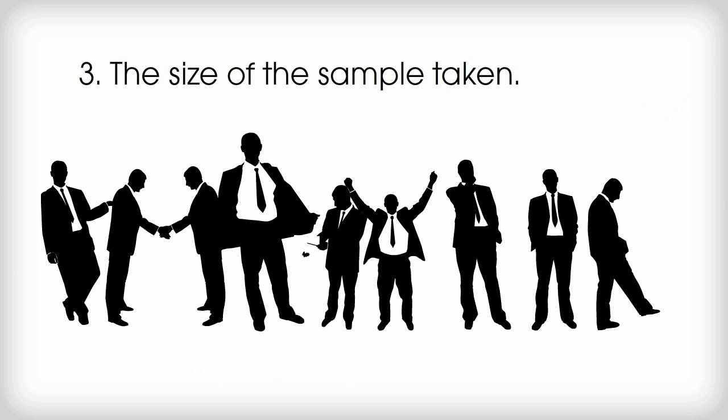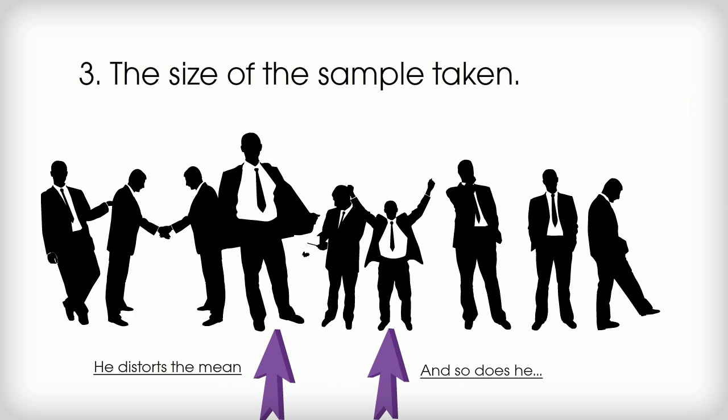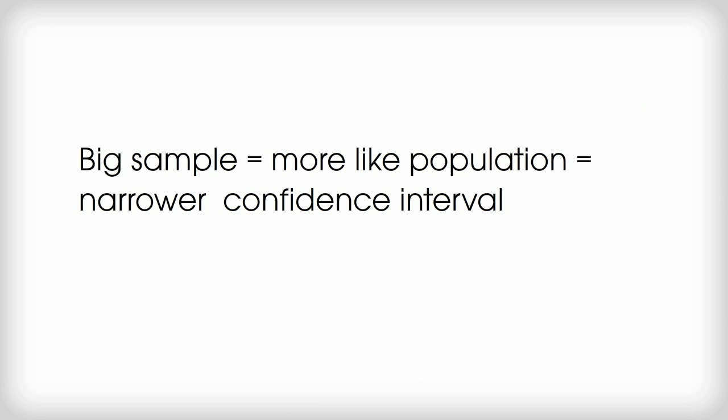Three, the size of the sample taken. If we take a small sample, there's not much information to go on. Small samples will vary more from each other. Larger samples will be more like each other. This is because the effect on the mean of unusual values, the occasional giant or the occasional dwarf, is evened out by the fact that there are more values to draw the mean from. Basically, the bigger the sample, the less sampling error will occur. The confidence interval will be narrower with big samples.